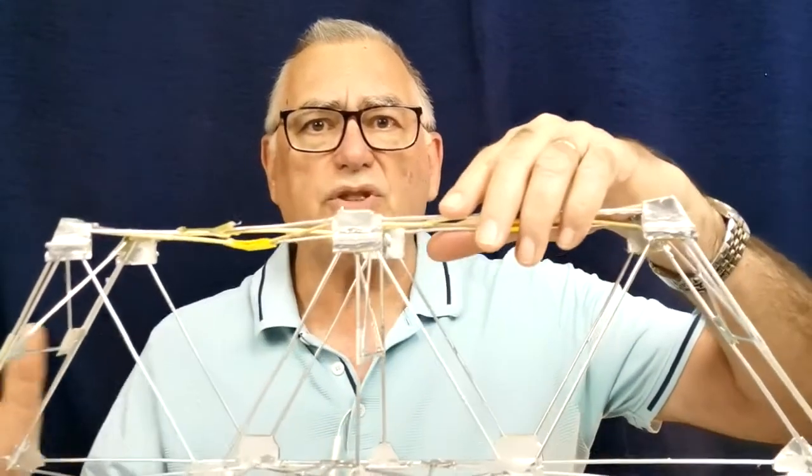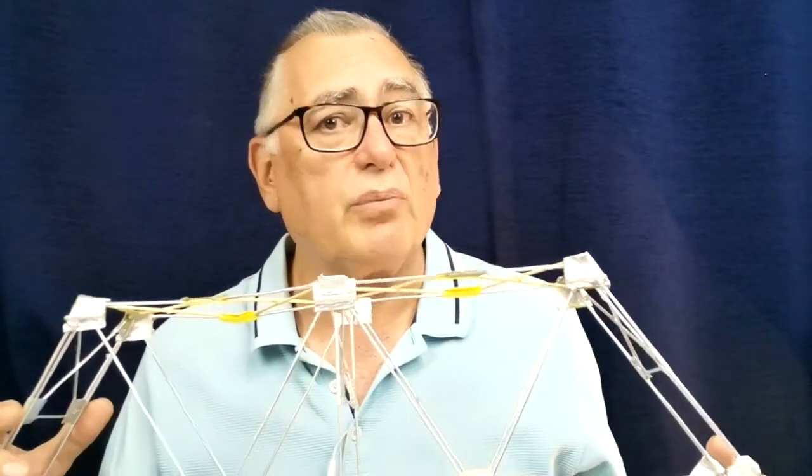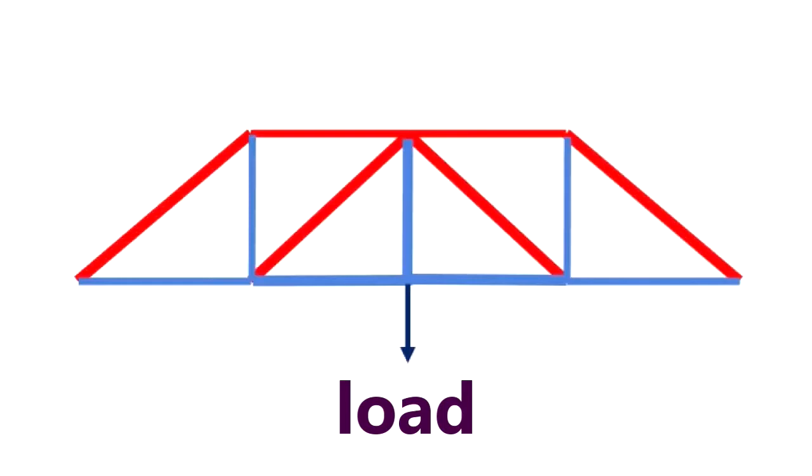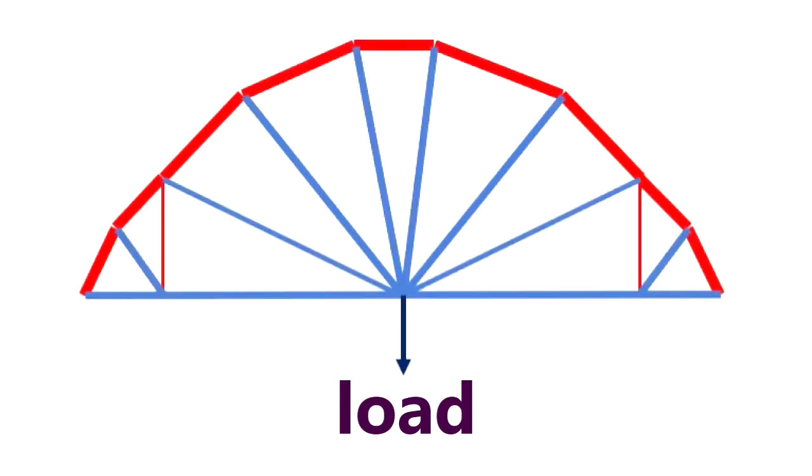But how do we know which members of a truss bridge are in tension and which are in compression? Let's look at some examples. In each of the diagrams, the members in tension are shown in blue and the members in compression are in red. To keep things really simple, I've shown very approximately the relative forces that are being exerted by how thick I've drawn the members. Notice the similarities between which parts are normally under tension and which are normally under compression.